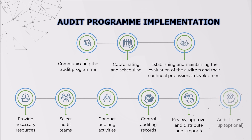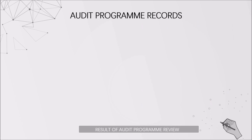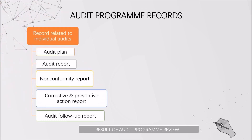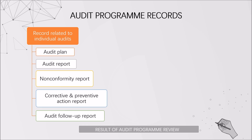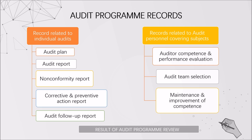For the audit follow-up option, it's totally depending on the organization's decisions. The record related to individual audits consists of the audit plan, audit report, non-conformity report, corrective and preventive action report, and finally audit follow-up report. While the records related to audit personnel cover auditor competence and performance evaluation, the audit team selection, and the maintenance and improvement of competence.